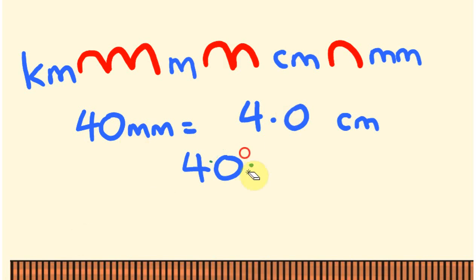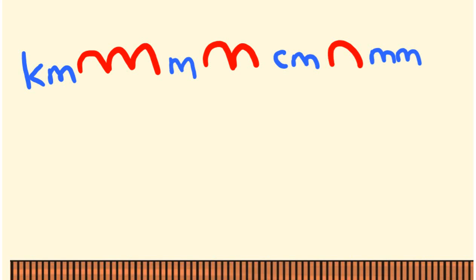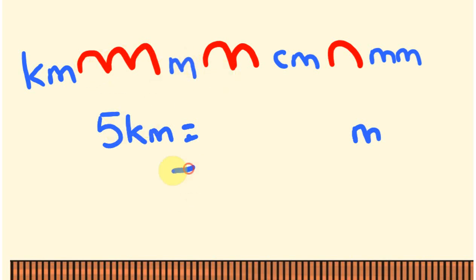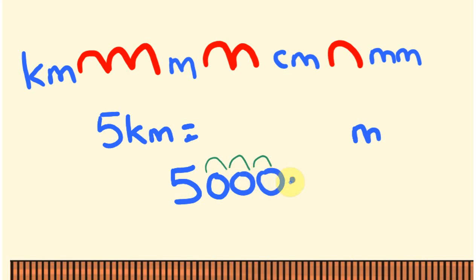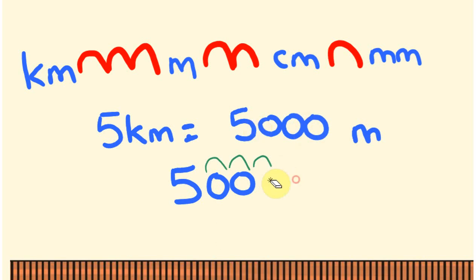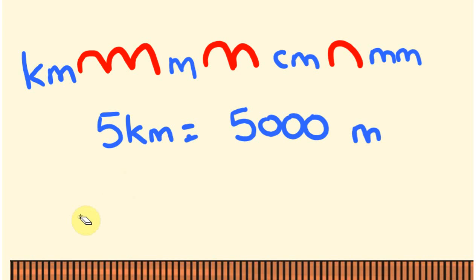Another example: 5 kilometres — how many metres is that? We're going from kilometres to metres, which is three jumps in that direction. Starting with 5, we move the decimal place three spots, adding three zeros, giving us 5,000 metres. That makes sense: 1 kilometre is 1,000 metres, so 2 kilometres is 2,000 metres, and 5 kilometres is 5,000 metres.